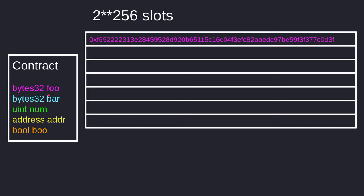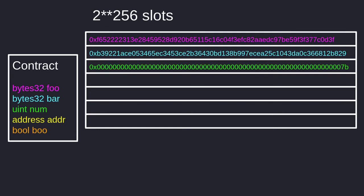Since foo is declared first and is 32 bytes, it will be stored in slot 0 using all of that slot. The second state variable bar will be stored in slot 1, and since bar is also 32 bytes, it uses up the entire slot. The third state variable uint will be stored in the third slot in hexadecimal notation — for example, if num equals 123, in hexadecimal it equals 7b. Since uint is 2^256, it needs 32 bytes, so it again uses all of the slot's capacity.